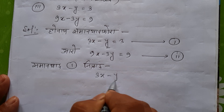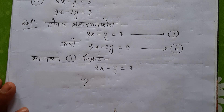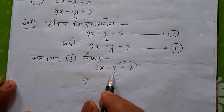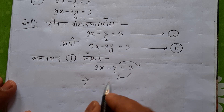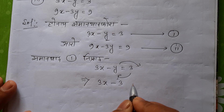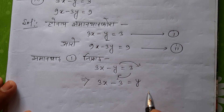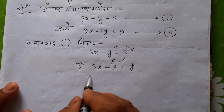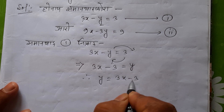3x minus y is equal to 3. If y is equal to 2, then y is equal to 3. This is minus 2 — you will know that y will become 3 by adding 3. So, 3 plus b minus y by adding plus y, it will be 3x minus 3. That means y equals 3x minus 3.